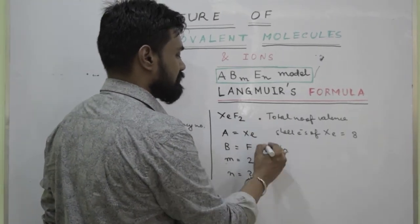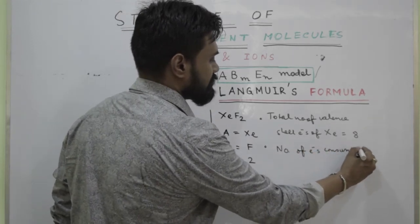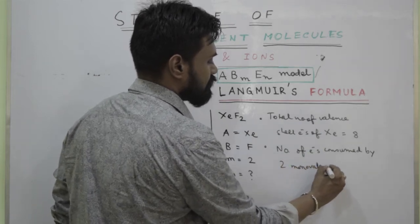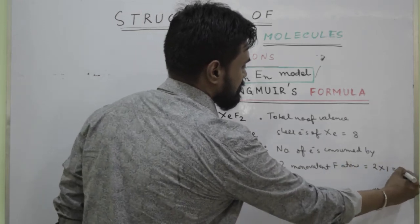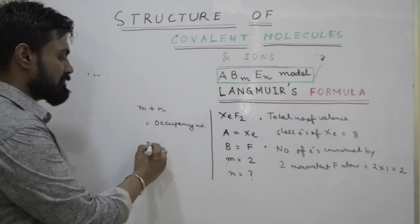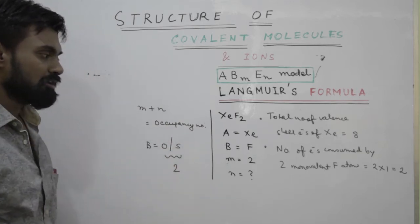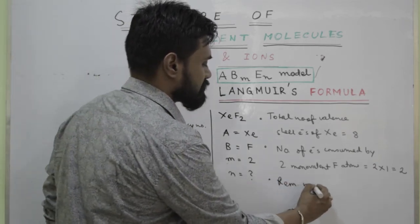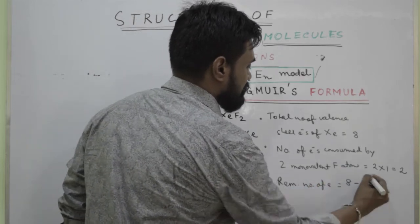Next is part B: number of electrons consumed by two monovalent chlorine atoms. Dear students, I must point out something over here. If B atom anywhere is oxygen or sulfur, take them as bivalent, remaining all are monovalent. Next comes remaining number of electrons, that is total minus consumed, that is 6.